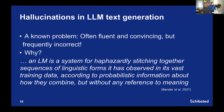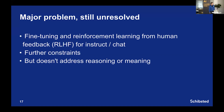Taking a step back to think more generally about hallucinations in text generation from large language models: it's a notorious aspect of these models. They're often very fluent and convincing, but at the same time frequently make factual errors. A very influential paper investigated this, stating that a language model is a system for haphazardly stitching together sequences of linguistic forms observed in vast training data according to probabilistic information about how they combine, but without any reference to meaning — basically a stochastic parrot.